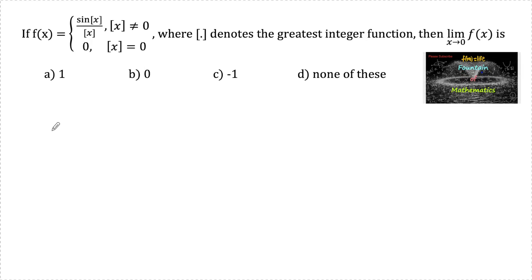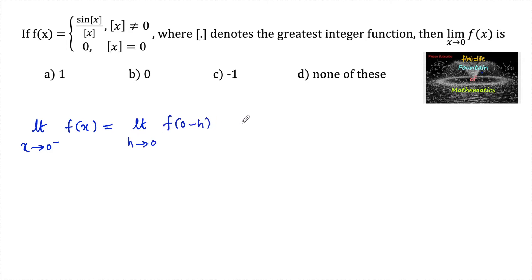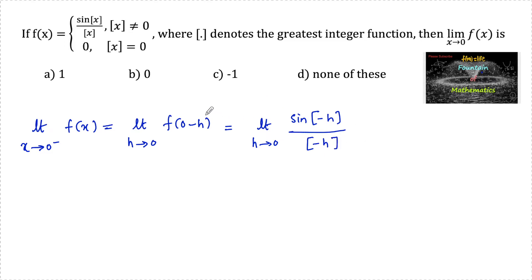As we know, the greatest integer function is not defined at integer values. The left-hand limit: limit x tends to 0 minus of f of x, which equals limit h tends to 0 of f of 0 minus h, that is f of minus h. So we can substitute: limit h tends to 0 of sin of [−h] upon [−h], since [−h] is not equal to 0.